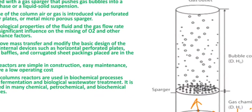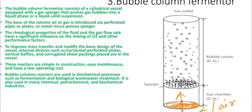The bubble column fermenter consists of a cylindrical vessel with a gas sparger that pushes gas bubbles into the liquid phase. At the base of the column, air or gas is introduced by perforated pipes or plates or metal microporous spargers placed at the bottom.